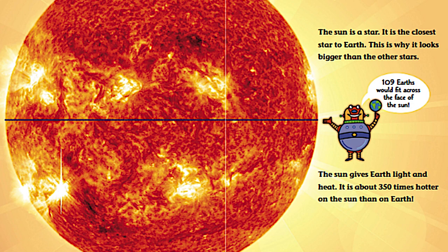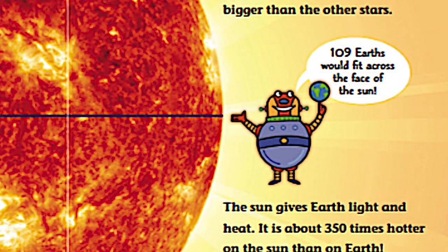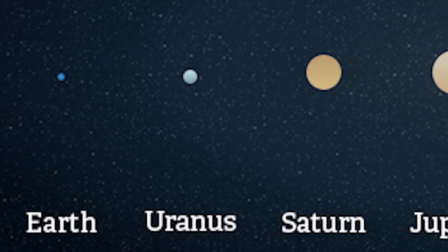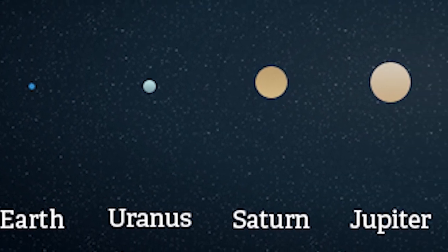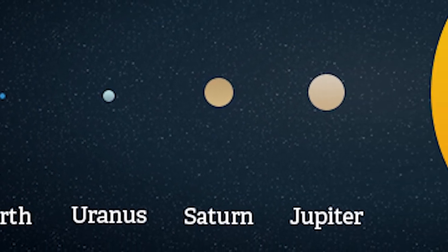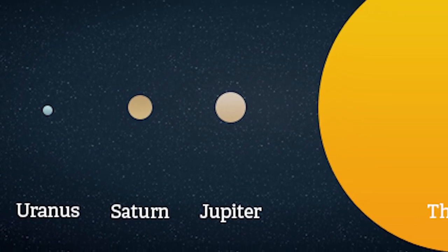It gets pretty hot here on earth, doesn't it? So hot that sometimes we need our air conditioning on. Can you imagine being on the sun at 350 times hotter? There is no way to survive that. Take a look at our little guy in the middle here. He says 109 earths would fit across the face of the sun. 109 earths, our planet, 109 of them. Can you believe that? That's how big the sun is.